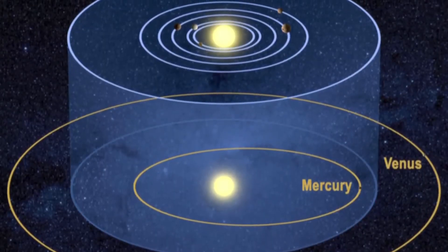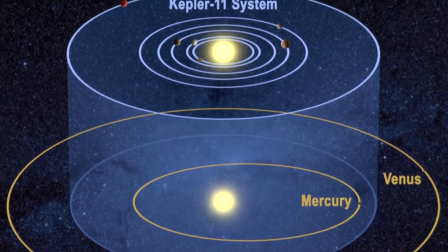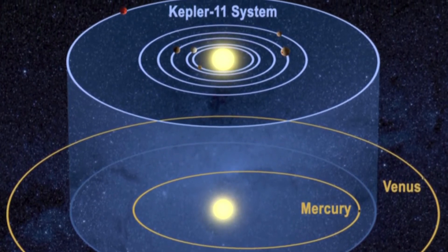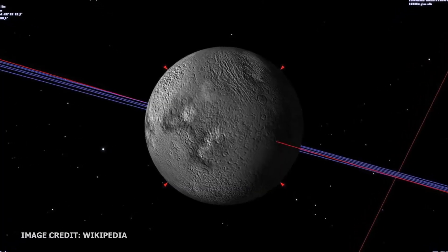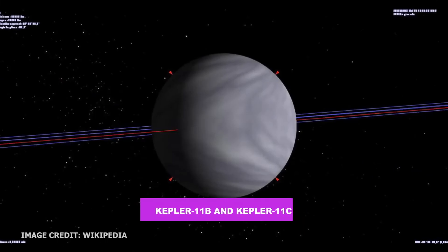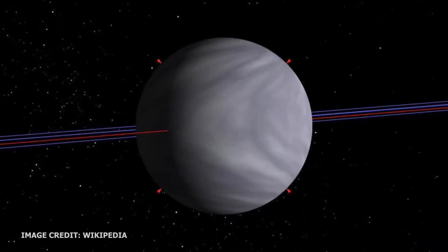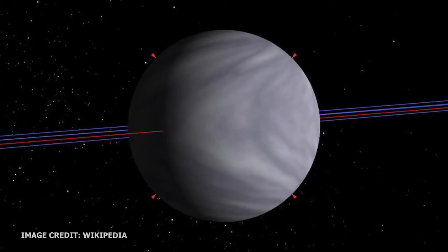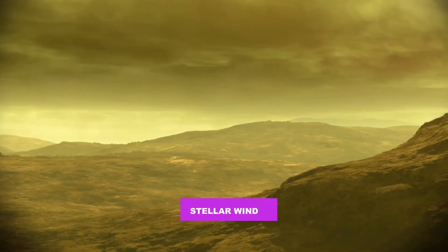Kepler-11e's orbital inclination is 88.8 degrees, making it almost entirely edge-on to its star as seen from Earth. Because it isn't as close to its star as its sister planets Kepler-11b and Kepler-11c, the Kepler team suggests that its light density may come from a large hydrogen and helium atmosphere that has not been blown away by the stellar wind.